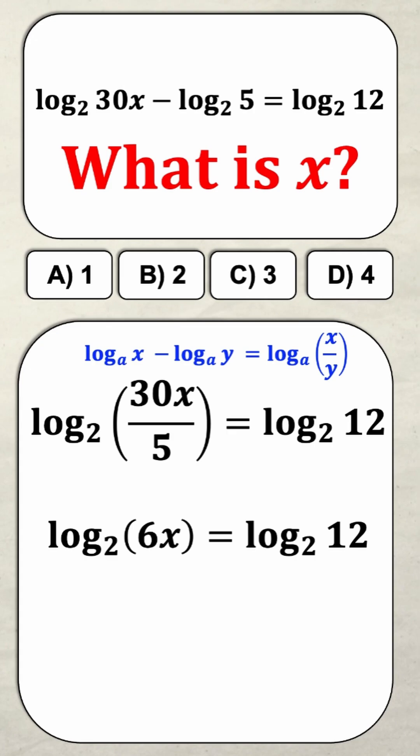And again, since they're both the same base, we know that the expressions must be equal to each other, which means that 6x must be equal to 12.